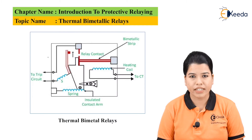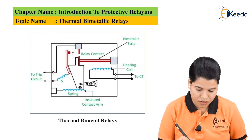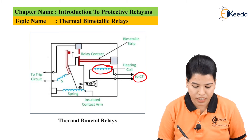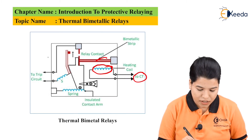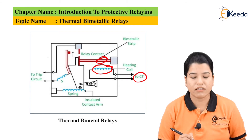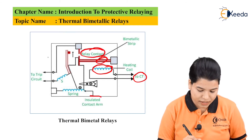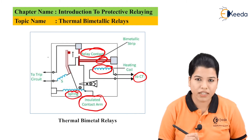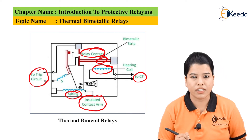The diagram shows the thermal bimetallic relay. The various parts include: the heating coil, which gets its input from the current transformer (CT); the bimetallic strip; the relay contacts; one insulated contact arm; one spring; and the output is given to the trip circuit of the relay.